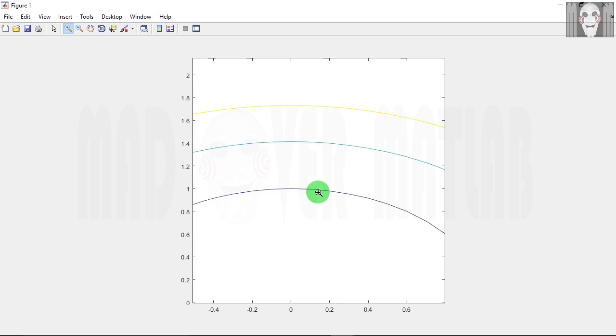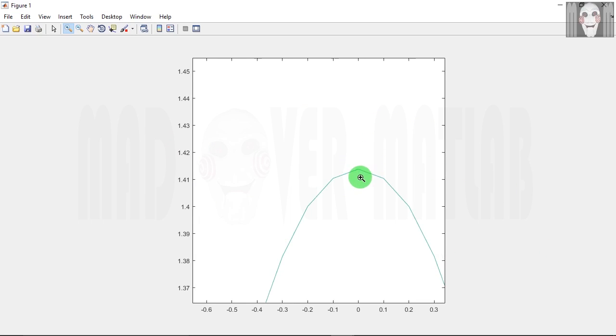The first or the innermost contour has a radius of 1 unit. The second contour has a radius of 1.414 approximately, which corresponds to root 2 since we had given the argument there as 2.